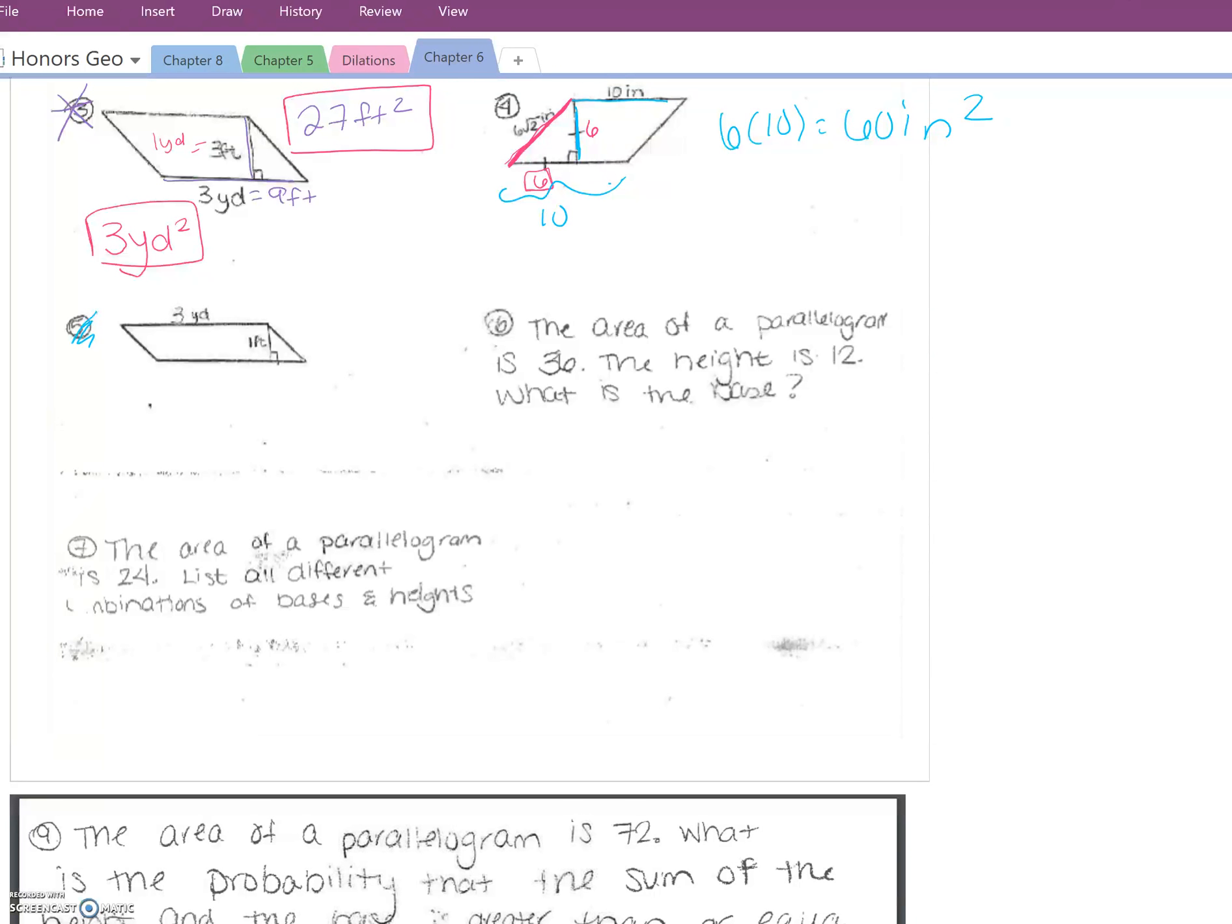Number 6, you have to work backwards. So the area of a parallelogram is 36, the height is 12, so what times 12 equals 36? The base has to equal 3.